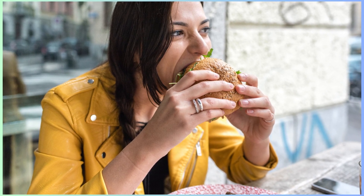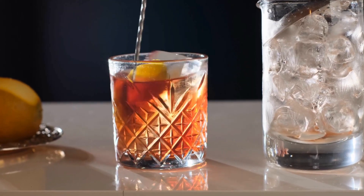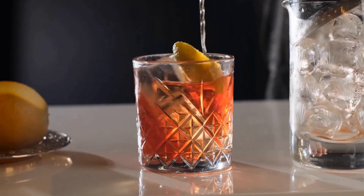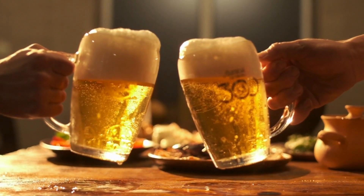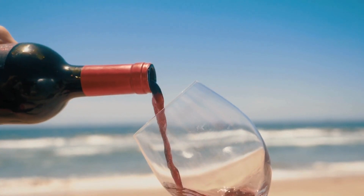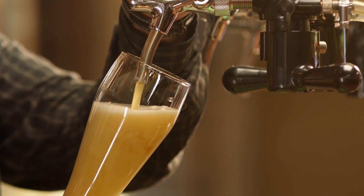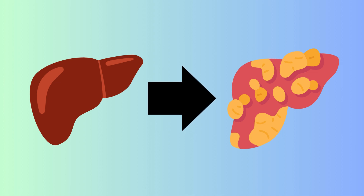The first main cause of fatty liver disease is too much alcohol. Drinking alcohol can lead to a range of liver conditions, including alcoholic fatty liver disease. This condition arises because the liver, which is responsible for breaking down and removing toxins from the body, is overwhelmed by the alcohol. As a result, the liver begins to accumulate fat, leading to fatty liver disease.